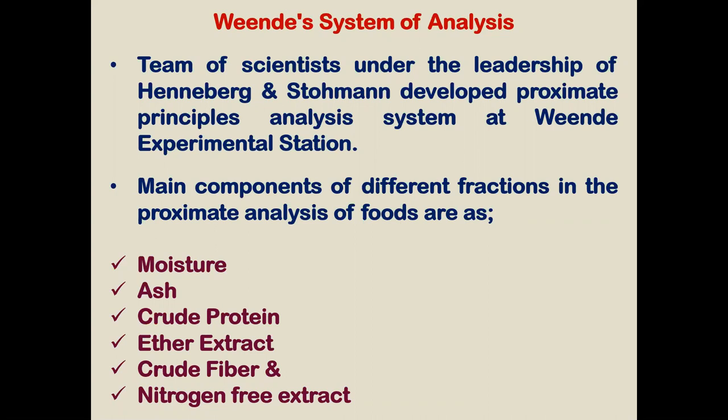First of all, I would like to discuss about the proximate principles, from where they first started. This is also known as the Weende system of analysis. Weende is a place situated in Germany, where the first time a group of scientists under the leadership of Haneberg and Stollman developed the proximate principle, which contains moisture, crude protein, ether extract, crude fiber, and nitrogen-free extract. These six principles come under the proximate principle.